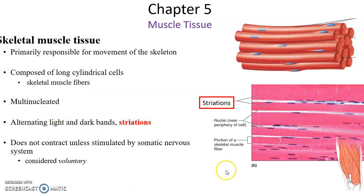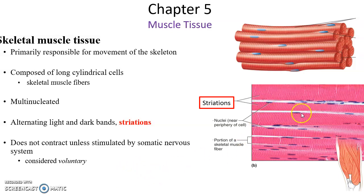Skeletal muscle cells are multinucleated — they have multiple nucleuses per cell. Looking at the slide, each of these little dark dots represents nuclei, so there are a lot of nuclei per cell. They also have striations: an alternating dark and light banding pattern that goes along their length. And they do not contract unless stimulated by the somatic nervous system — the nervous system we voluntarily control. So skeletal muscles tend to only work when we consciously want them to.